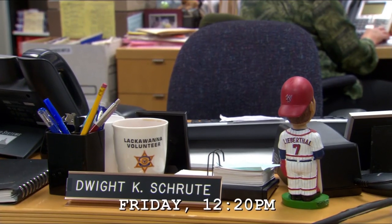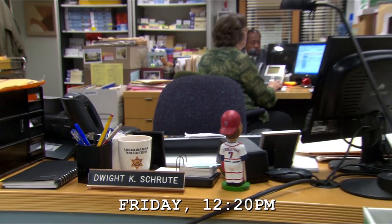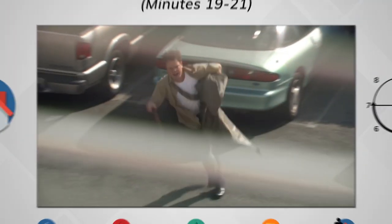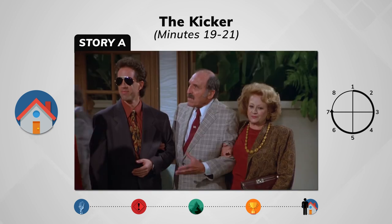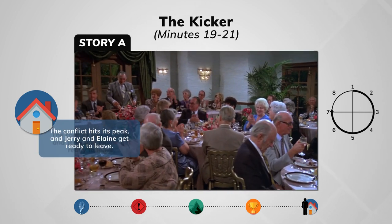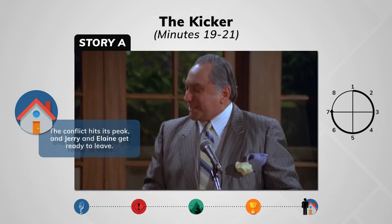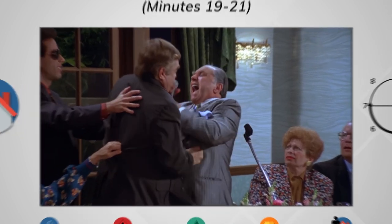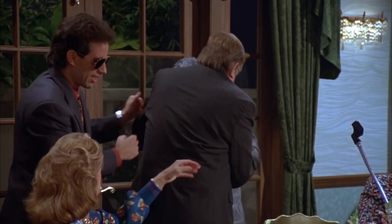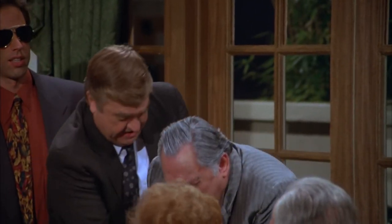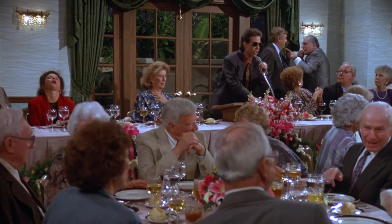We have the final beat for the B story — Jim's prank worked and Dwight is late for the first time ever. In the Seinfeld episode, the family goes to the dinner for Jerry's father. Jack makes fun of Jerry's father in his speech, and they break out into a full-on brawl. After this, Jerry and Elaine are ready to leave, which concludes the conflict for this episode and sets up the next one.